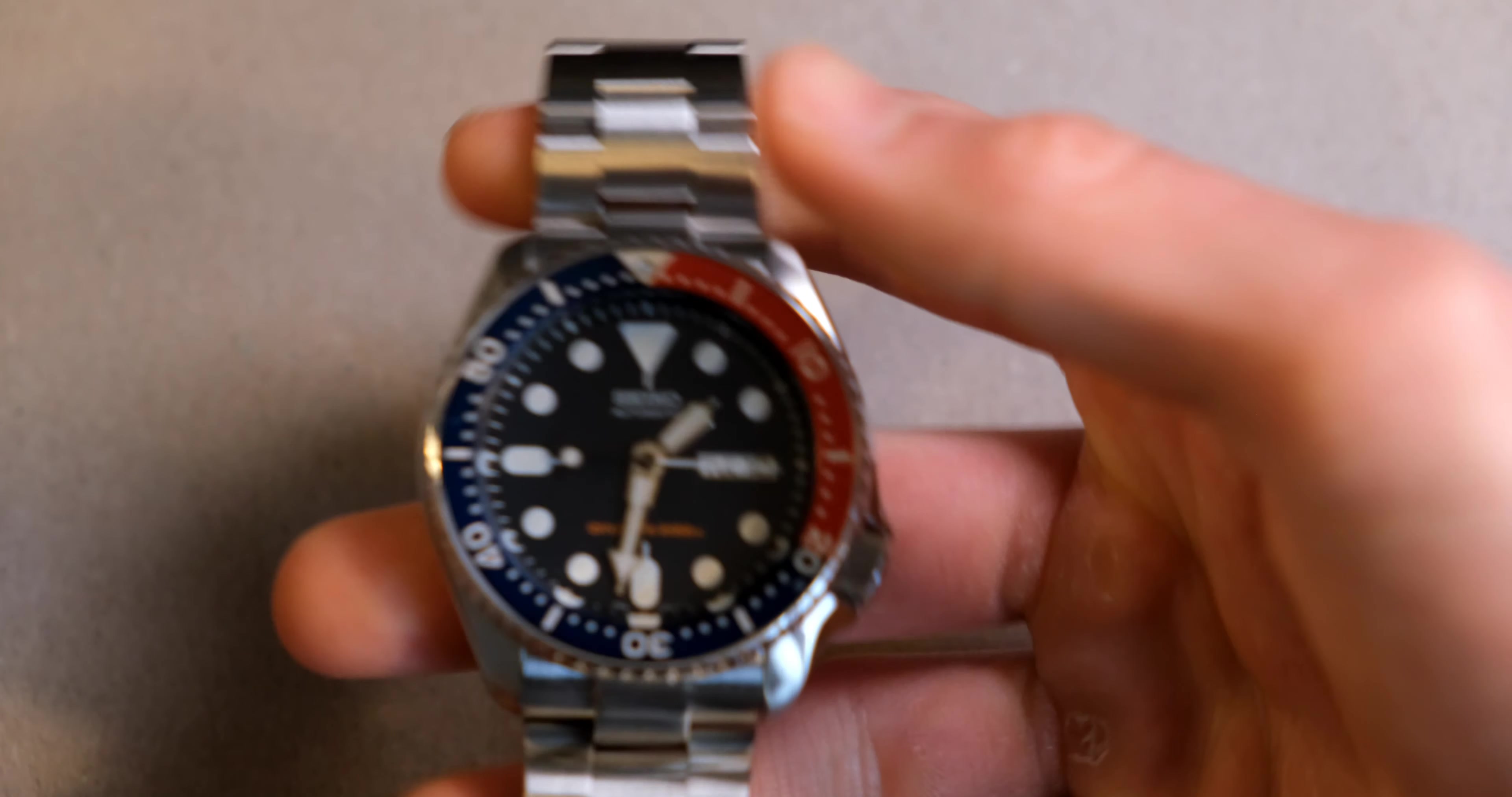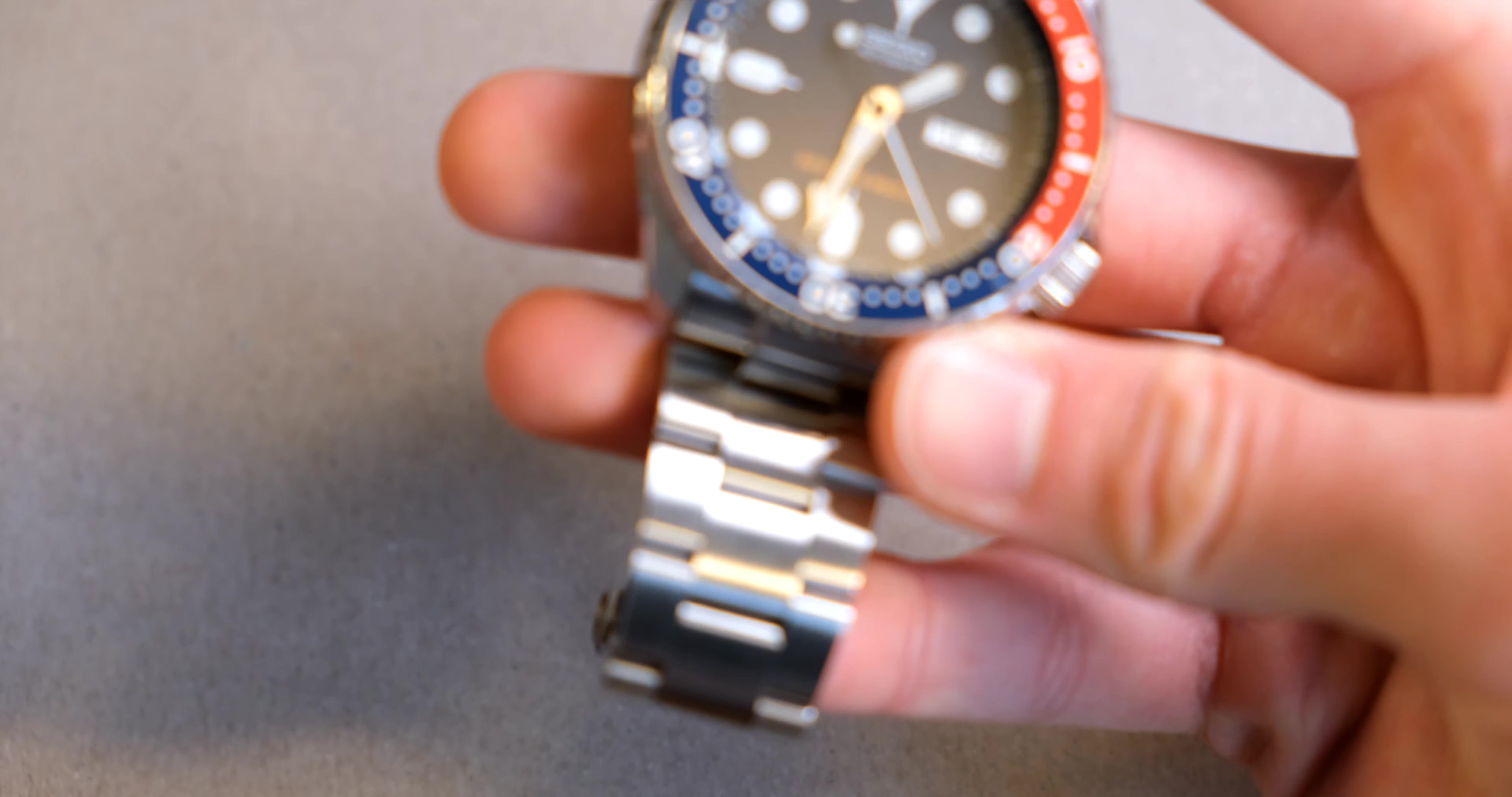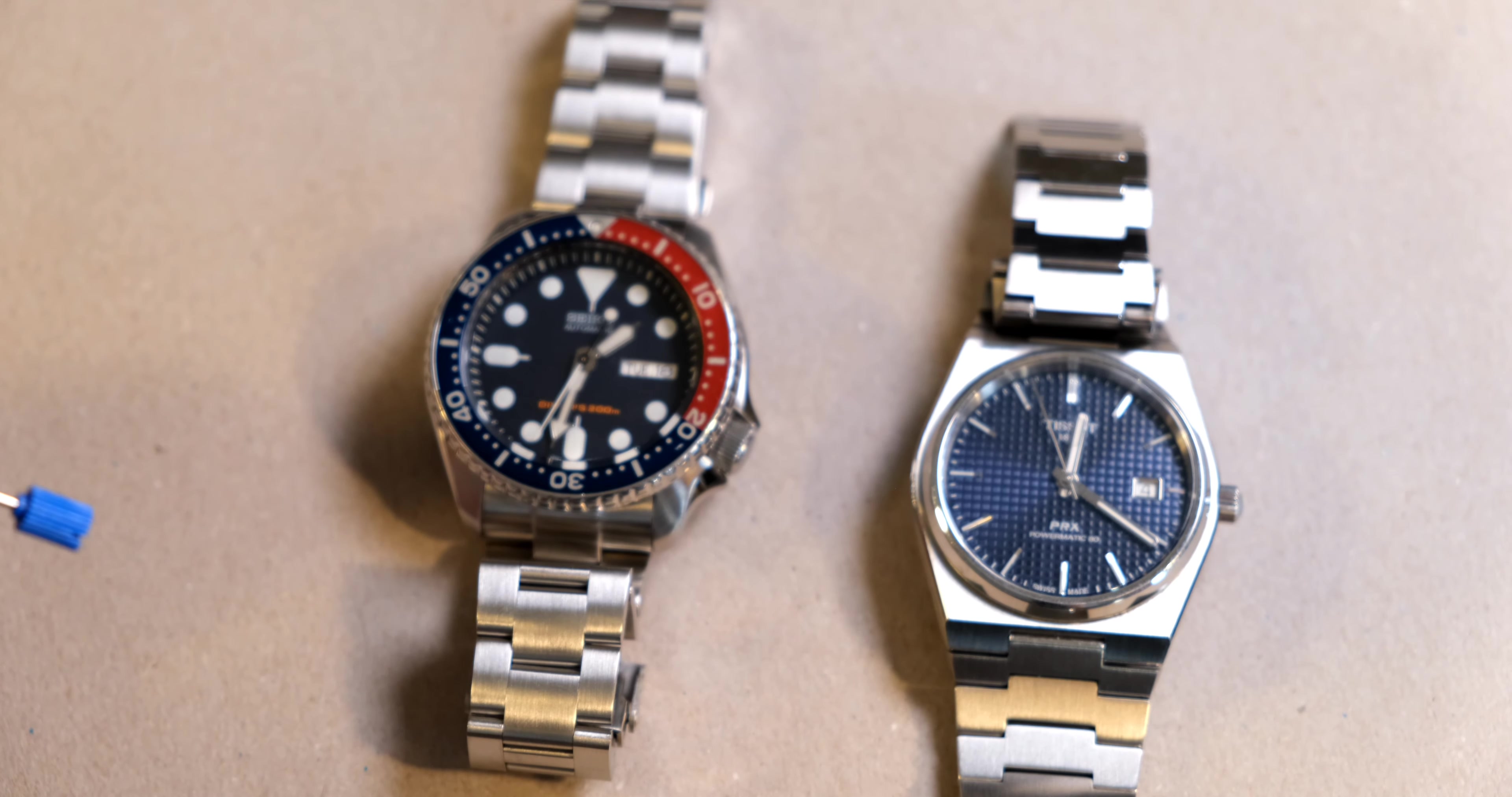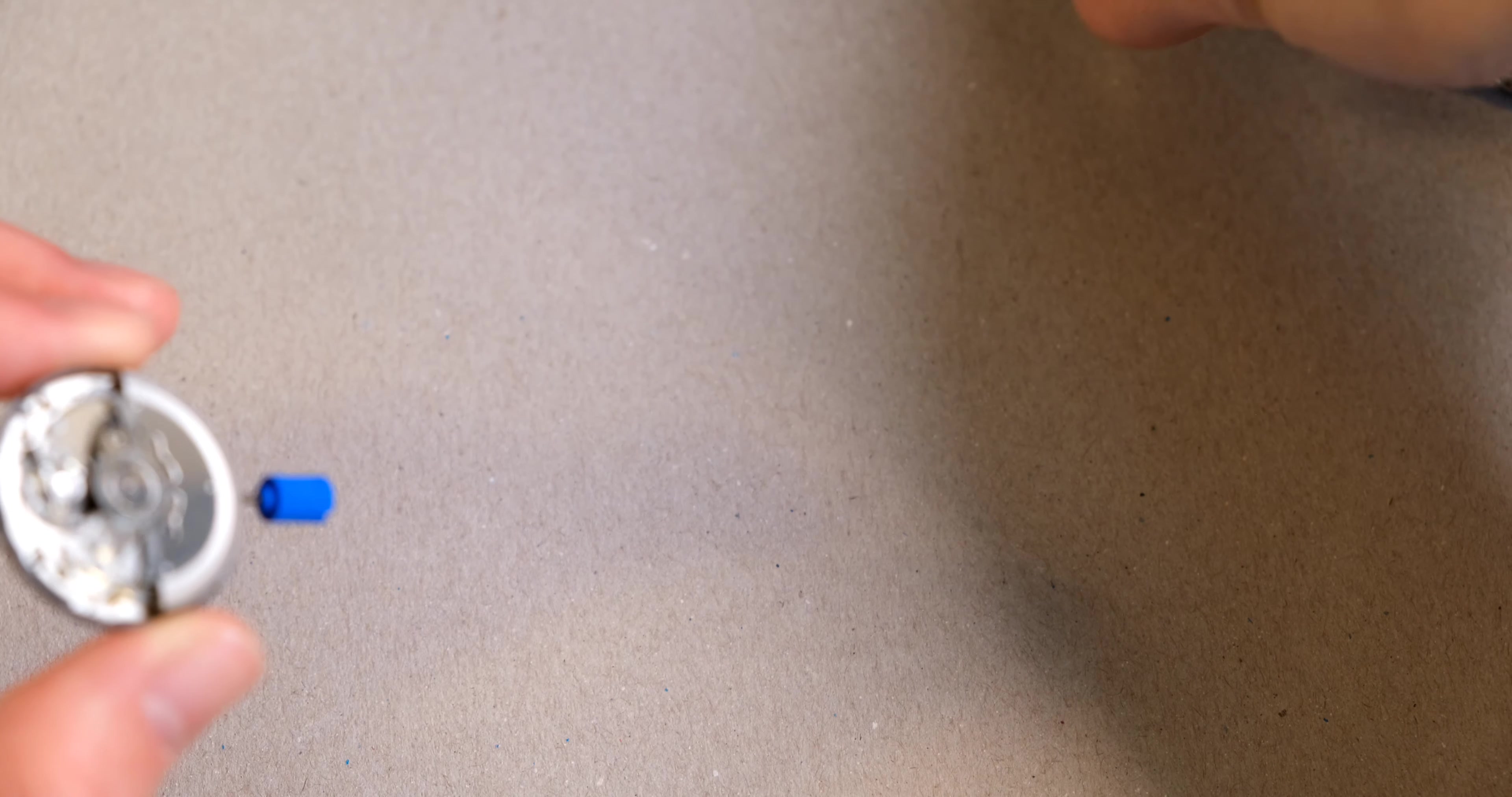Again, I've had this Seiko for more than three years, wearing it almost daily. And it runs great. It's more accurate than my Tissot PRX. It runs at like plus two seconds, where the PRX is like plus five or six. Both run well, but the Seiko runs better. And it's been running well ever since I got it. So I can't complain.